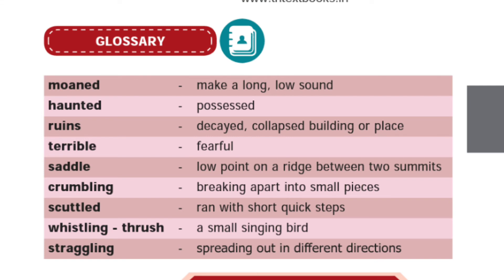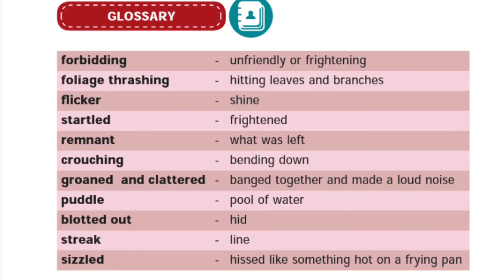Moving on to Section 2 glossary, page number 32. 'Straggling' — spreading out in different directions. 'Forbidding' — unfriendly or frightening. 'Thrashing' — hitting leaves and branches. 'Flicker' — shine. 'Startle' — frighten. 'Remnant' — what was left. 'Crouching' — bending down. 'Groaned and clattered' — banged together and made a loud noise. 'Puddle' — pool of water. 'Blotted out' — hid. 'Street' — line. 'Sizzle' — hissed like something hot on a frying pan.